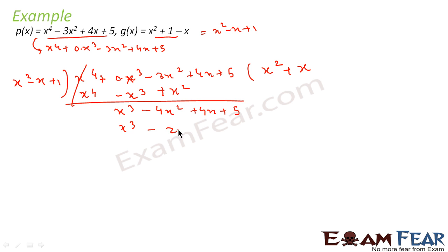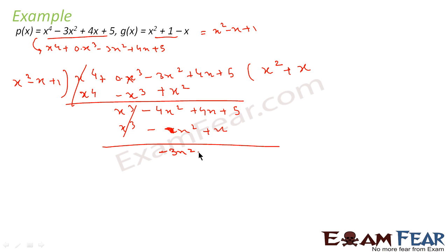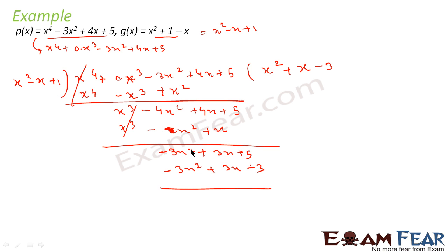Continuing: multiply x by x² to get x³, giving x³ − x² − ... actually x³ − x² − x. Wait — multiplying x by (x² − x + 1): x³ − x² + x. Subtracting: −4x² − (−x²) = −3x², then bringing down gives −3x² + 4x − x + 5 = −3x² + 3x + 5. Multiply −3 by (x² − x + 1): −3x² + 3x − 3. Subtracting: 5 − (−3) = 8. So the remainder is 8 and the quotient is x² + x − 3.